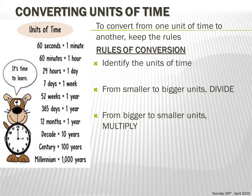Check whether you are converting from smaller to bigger units or bigger to smaller units. The smaller unit between seconds and minutes is the second. Between minutes and hours, minutes is smaller. Between days and weeks, days come first. Between weeks and a year, weeks come first. So always identify which unit is smaller and which is bigger, so you know whether to divide or multiply.